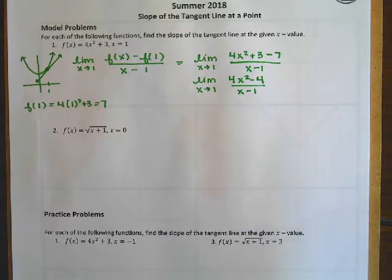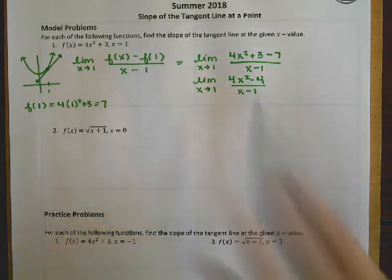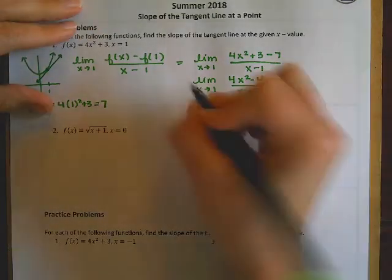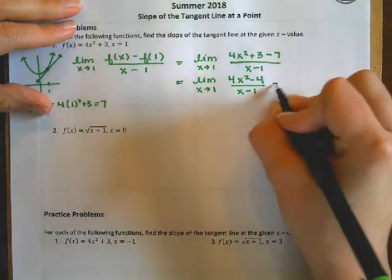And if I were to plug in 1, because remember we said that the first thing you should do is plug in. You're going to get 4 minus 4 over 1 minus 1. You're going to get 0 over 0. You're going to get the indeterminate form here. So let's do some factoring.